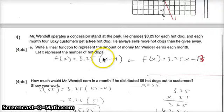So there's 2 ways you can write this function. You can say $3.25 per hot dog, 3.25x, and then minus 13. The minus 13 is the 4 hot dogs he's giving away, right? He's losing money.